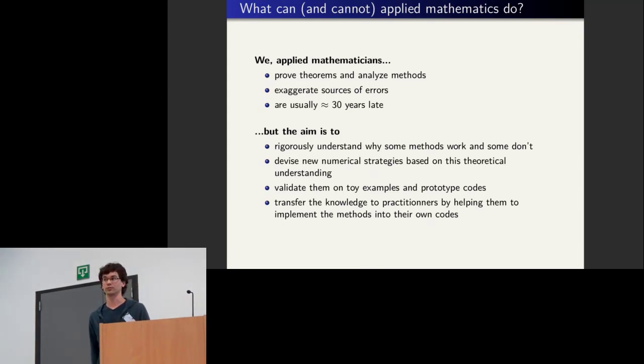The aim of this is to understand rigorously why some methods work and some don't. What can we say about the speed of convergence of methods with respect to certain parameters? What should we do to get better convergence? And based on that, to get new methods and implement them in codes.